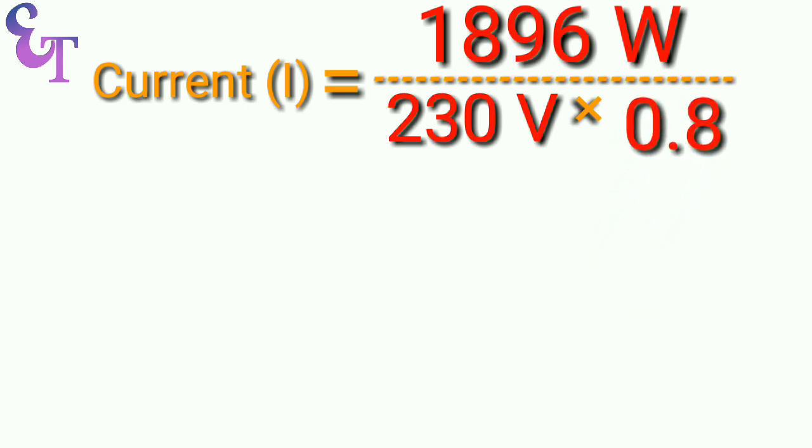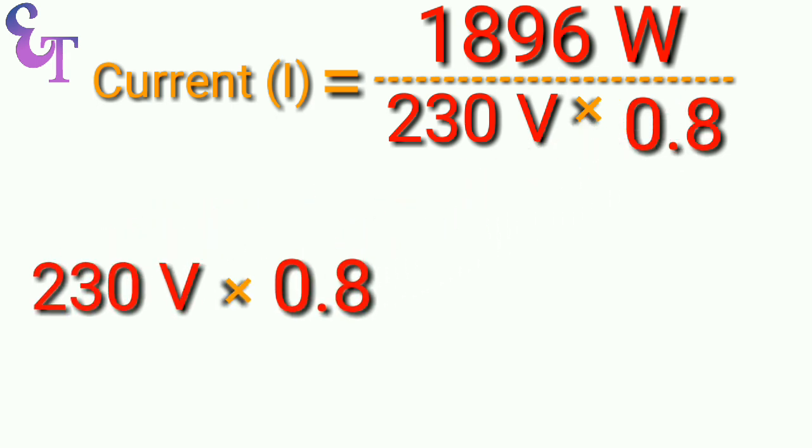Let's solve this equation. When we multiply 230 voltage with 0.8 power factor, the answer comes to 184.